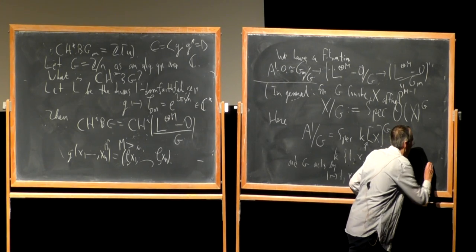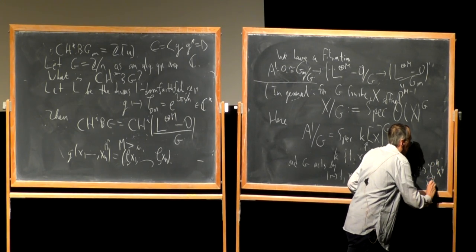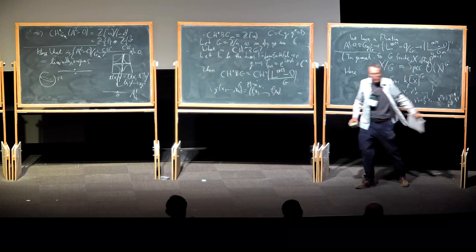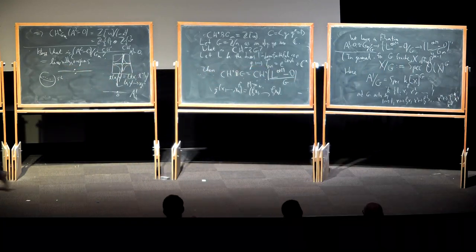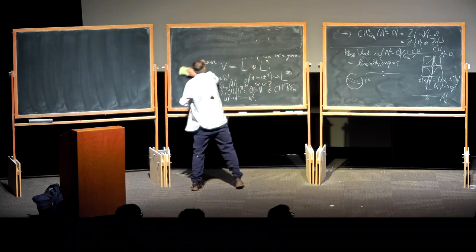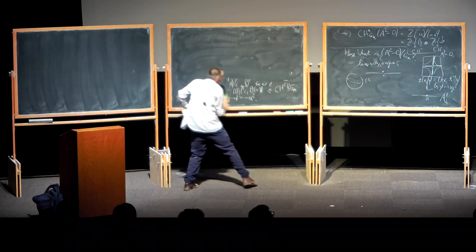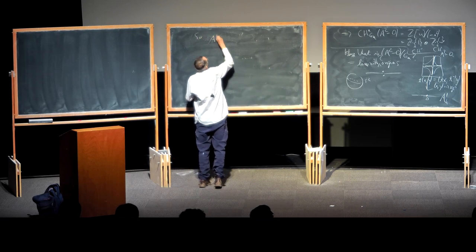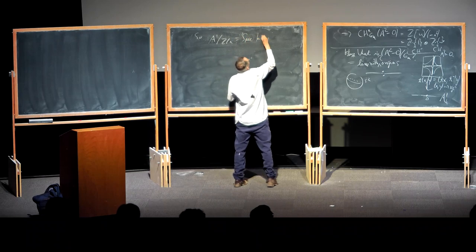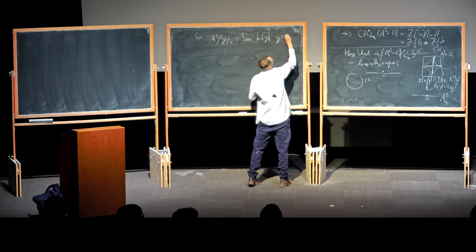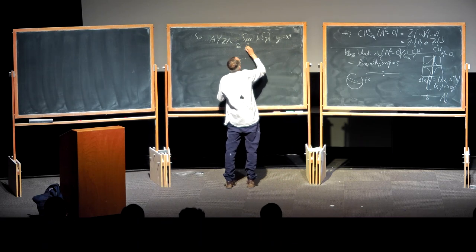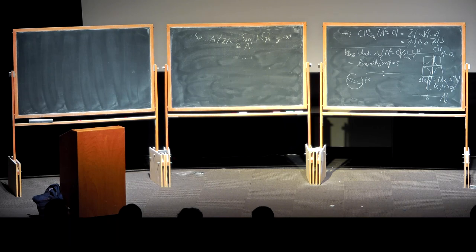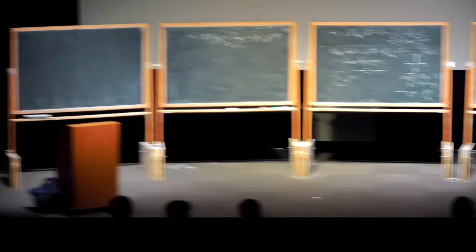So the ring of invariants is the polynomial ring generated by x^N, which is a polynomial ring K[y] where y = x^N. This is also the affine line. And if I had to remove the origin, that just corresponds to removing the origin in the image. So A¹\{0} modulo the cyclic group of order N is isomorphic to A¹\{0}.